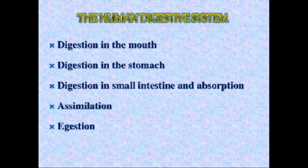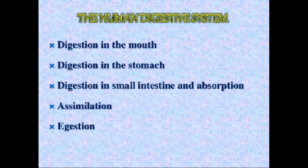Now the next topic is the human digestive system — how humans take nutrition. First, let us study the definition: digestion is the process in which food is broken down from complex form into simpler one. The process of converting complex food into simpler food is called digestion.